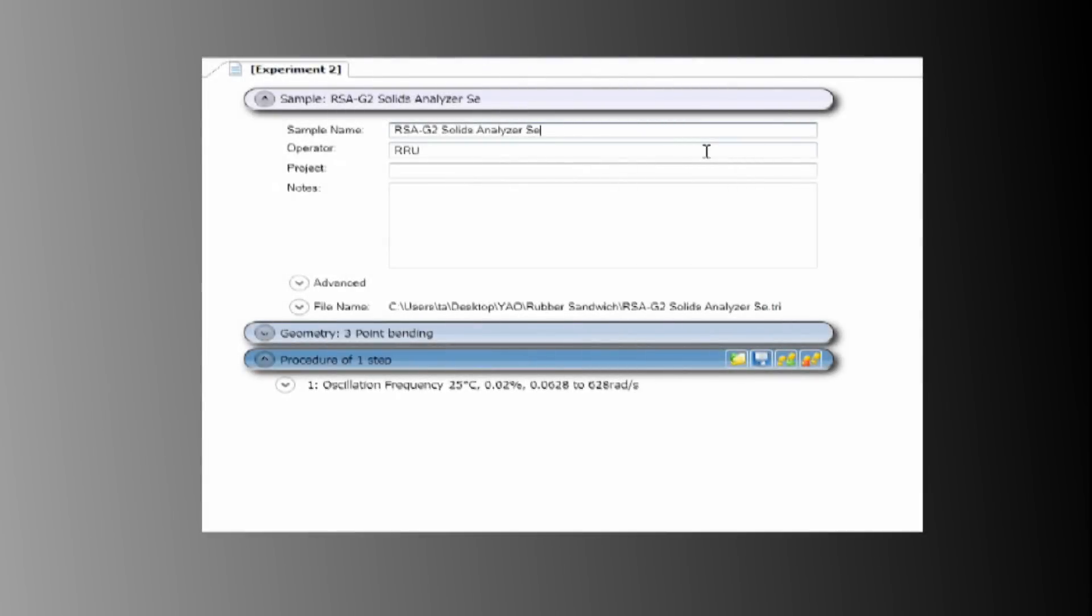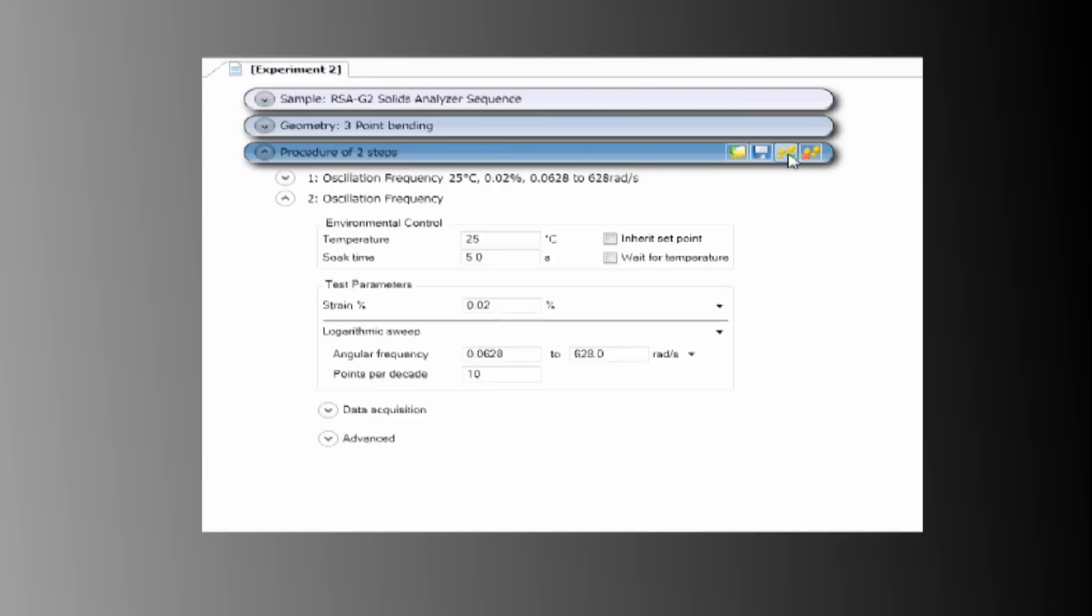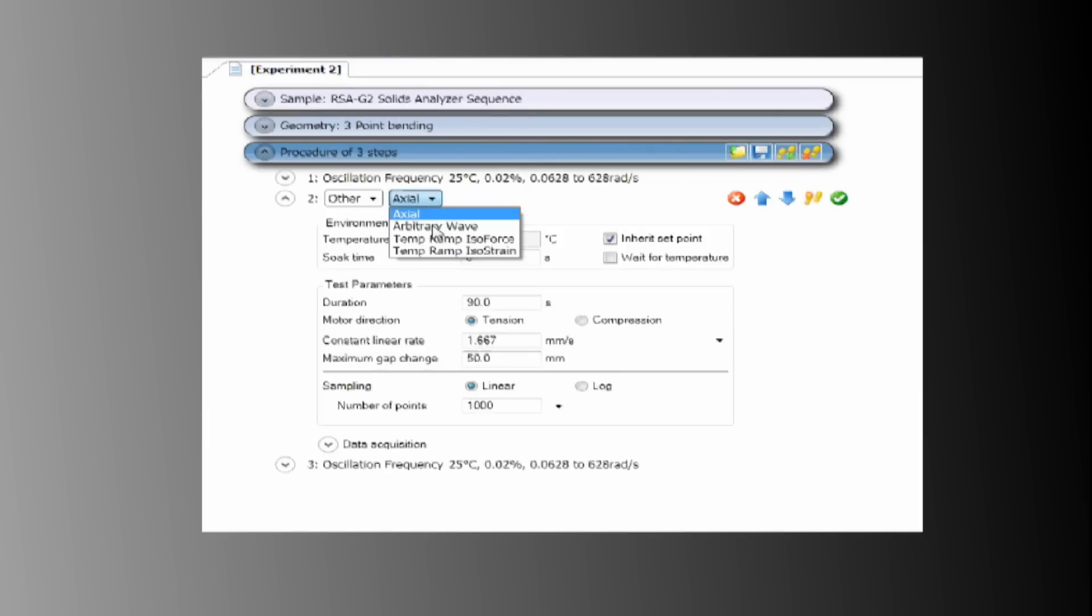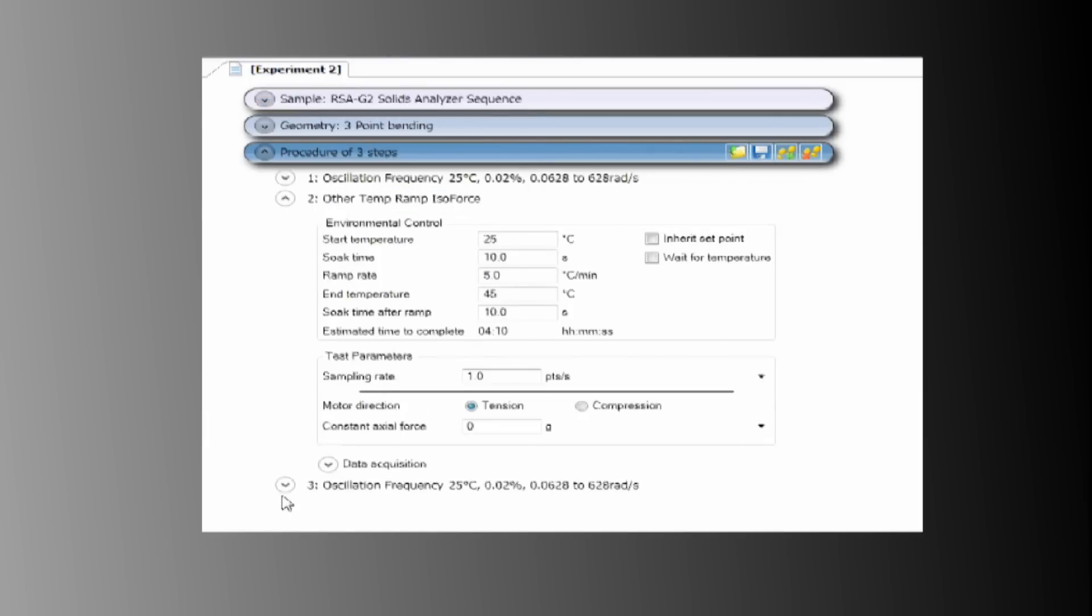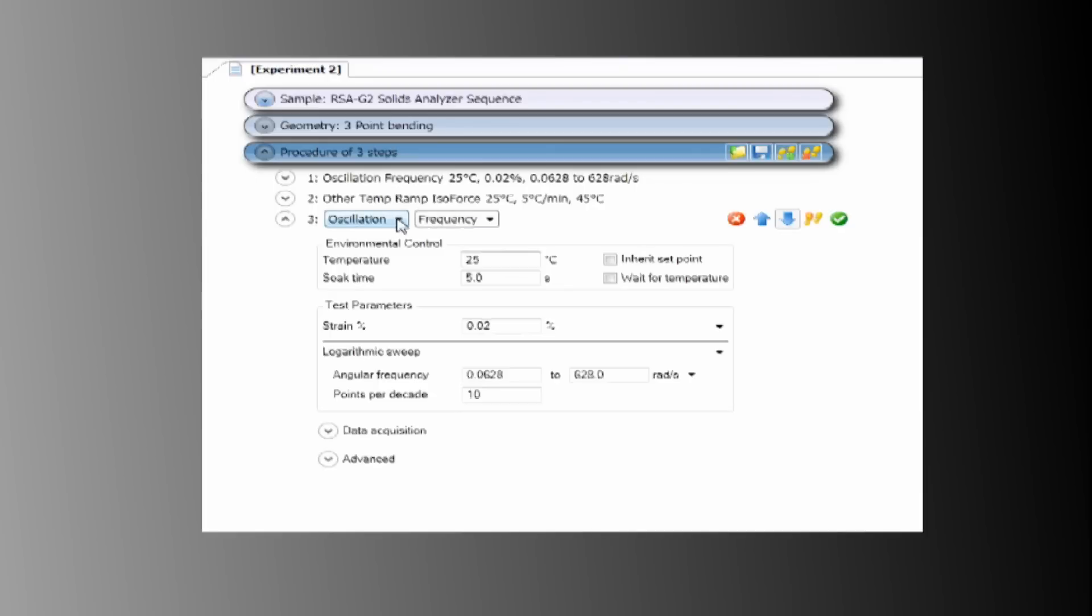When combined with powerful TRIOS software, the RSA-G2 takes mechanical testing to an even higher level. Using TRIOS, each experiment type can be easily programmed through intuitive templates, or experiment types can be sequenced and combined in any order for more complex testing requirements.